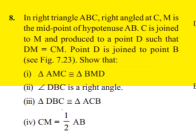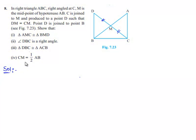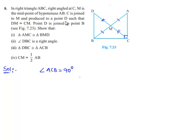Moving on to the solution, let us note down the given information. We have right angle triangle ABC, which is right-angled at C. So we can write angle ACB is equal to 90 degrees. M is the midpoint of hypotenuse AB, so AM is equal to BM. D is a point such that DM is equal to CM.